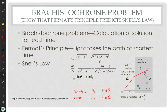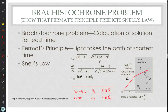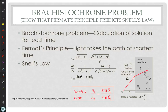The next thing: two weeks ago we did the brachistochrone problem showing that Fermat was indeed correct - that light takes the path of the shortest time. This shows that the path of shortest time gives us the same relationship as Snell's law. Snell's law is derived using Huygens' principle; this is derived using the brachistochrome. They come to the same result, which means Fermat was correct.